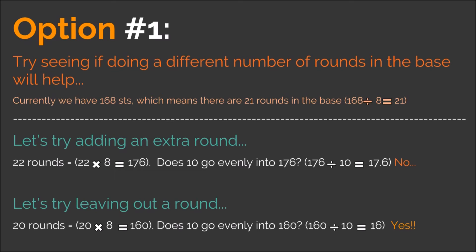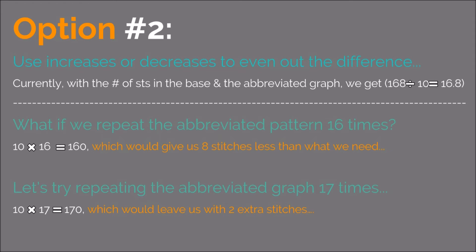So that's option number one — trying out a different number of rounds in the base to see if that will help the abbreviated graph fit onto the base. If you don't want to change the base at all, you have a second option: leave the base and the abbreviated graph alone, but use increases or decreases to even out the difference when an abbreviated graph doesn't fit onto a base evenly. Once again, with 168 stitches in the last round and 10 stitches in the abbreviated graph, we get 168 divided by 10 equals 16.8 — meaning we'd have to repeat the abbreviated graph 16.8 times. To find out how many increases or decreases we'd need, we take the information we already have and play around with a couple of different possibilities.